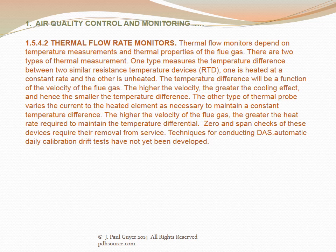Thermal flow monitors depend on temperature measurements and thermal properties of the flue gas. One type measures the temperature difference between two similar resistance temperature devices, abbreviated RTD — one is heated at a constant rate and the other is unheated. The temperature difference is a function of flue gas velocity; the higher the velocity, the greater the cooling effect and hence the smaller the temperature difference. The other type varies the current to the heated element to maintain a constant temperature difference. Zero and span checks of these devices require their removal from service. Techniques for conducting DAS automatic daily calibration drift tests have not yet been developed.